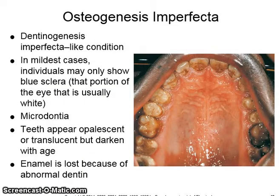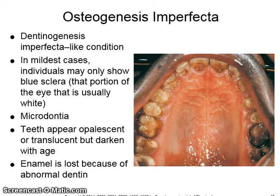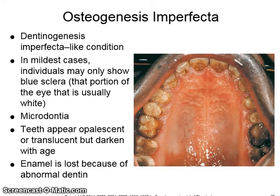Osteogenesis imperfecta presents a dentinogenesis imperfecta-like condition. In the mildest cases, the individual may only show blue sclera. It also includes microdontia, and the teeth appear opalescent or translucent but darken with age. The enamel is lost because of the abnormal dentin.